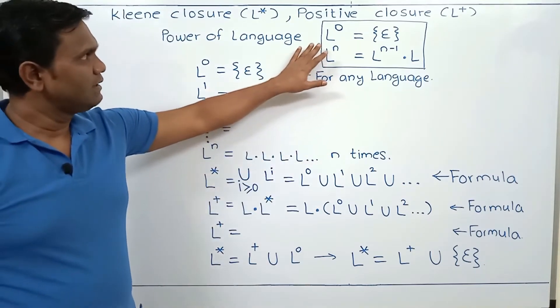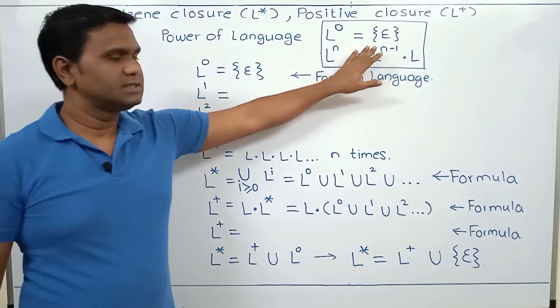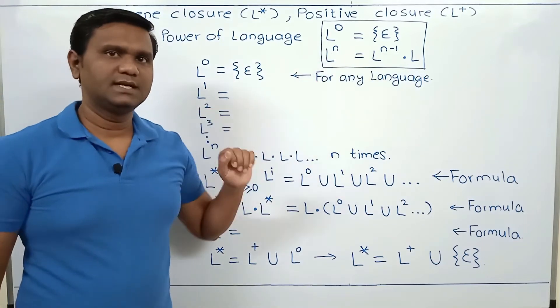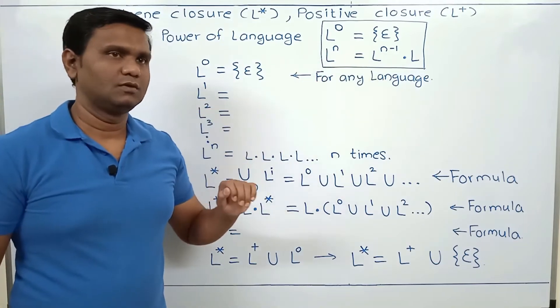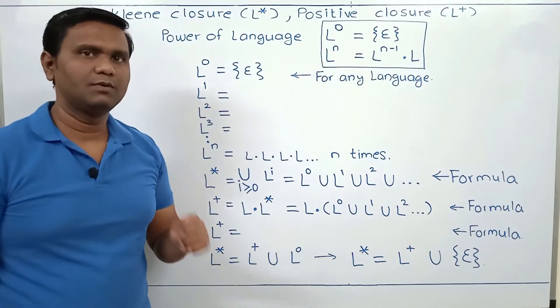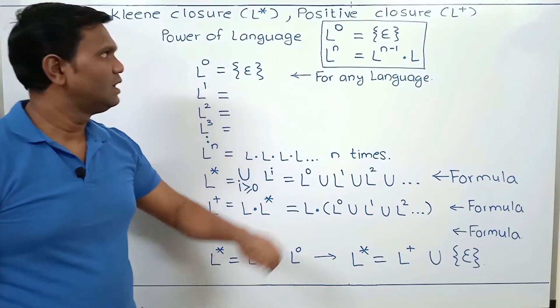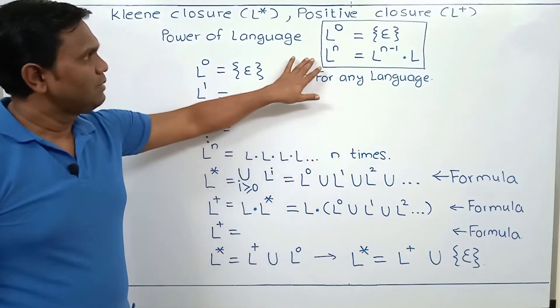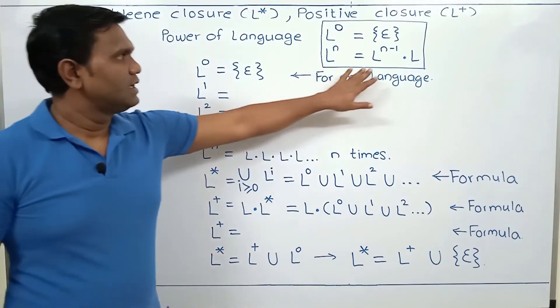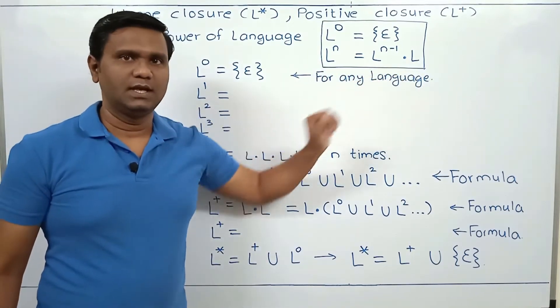For any language, L power 0 is the singleton set containing epsilon. Then for L power 1, L power 2, L power 3, and so on, L power n is L power n minus 1 dot L.